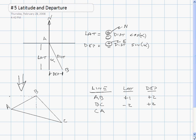And then for line CA, the latitude is positive 1, and the departure is negative 4.